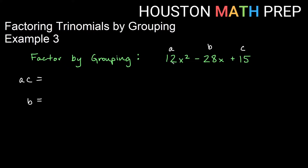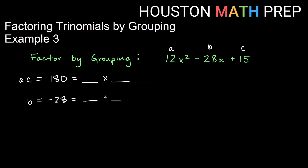Looking at a times c, you have 12 times 15. That's a bigger number than we've been dealing with — it's 180 — and b is negative 28. The process, remember, is two numbers that multiply to get a times c, and those same two numbers will add to give us b. The trick is: what multiplies to get 180 and adds to get negative 28? If you're not sure, start thinking about pairs of factors that give you 180 and begin listing them.